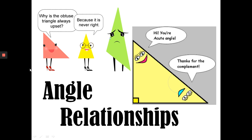This video explains angle relationships — some of the basic ones — and how you can find the measurement of an angle just by knowing other angles. You have to understand acute and obtuse angles. Why is the obtuse triangle always upset? Because it's never right. Dad joke. We're talking about complements, supplements, adjacent, and vertical angles.